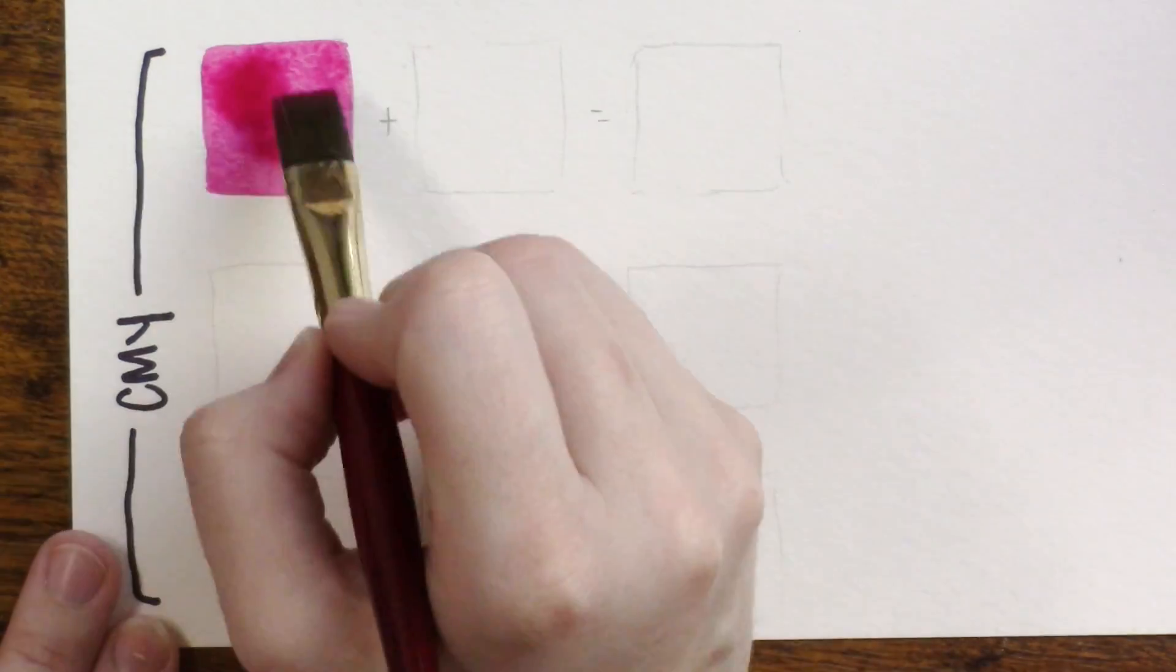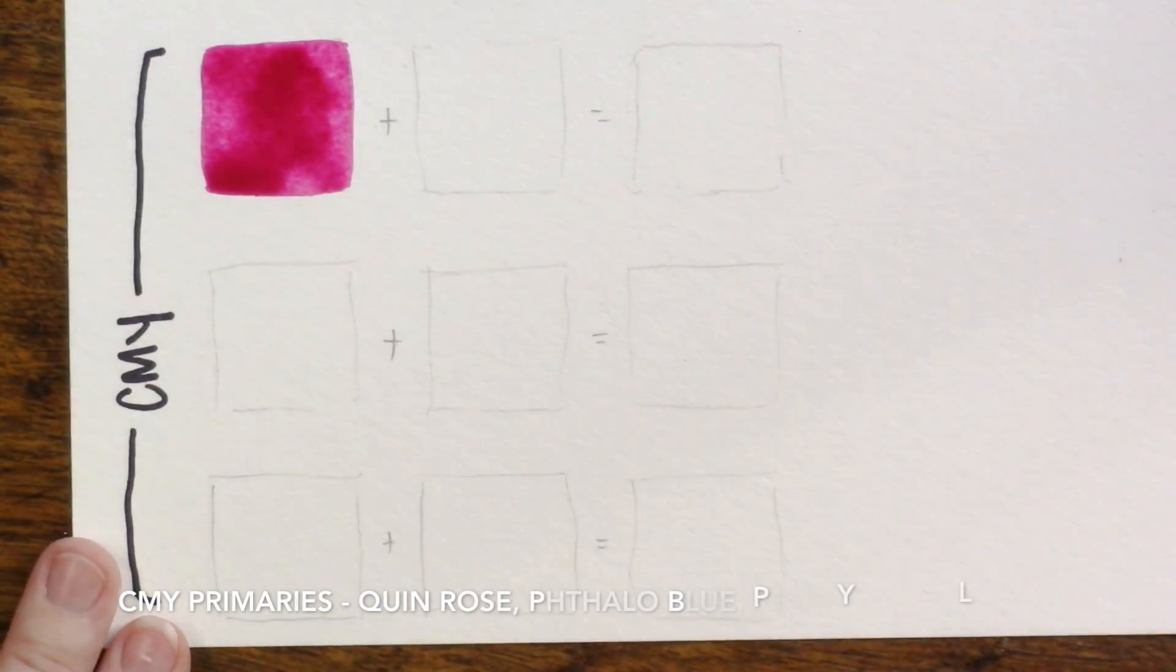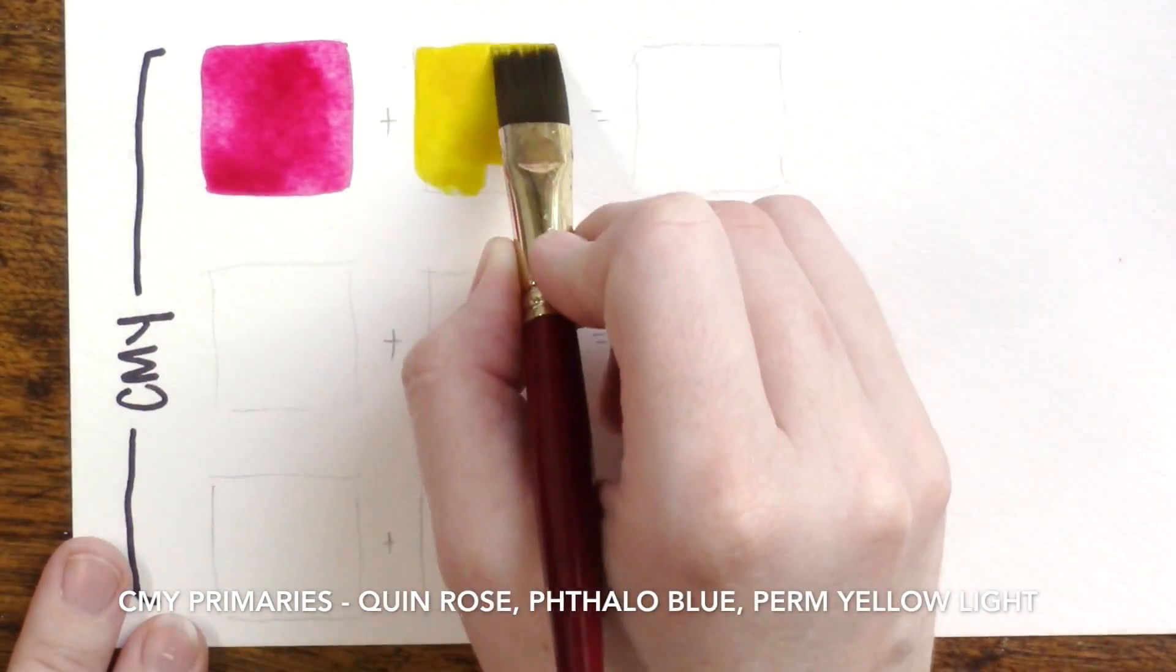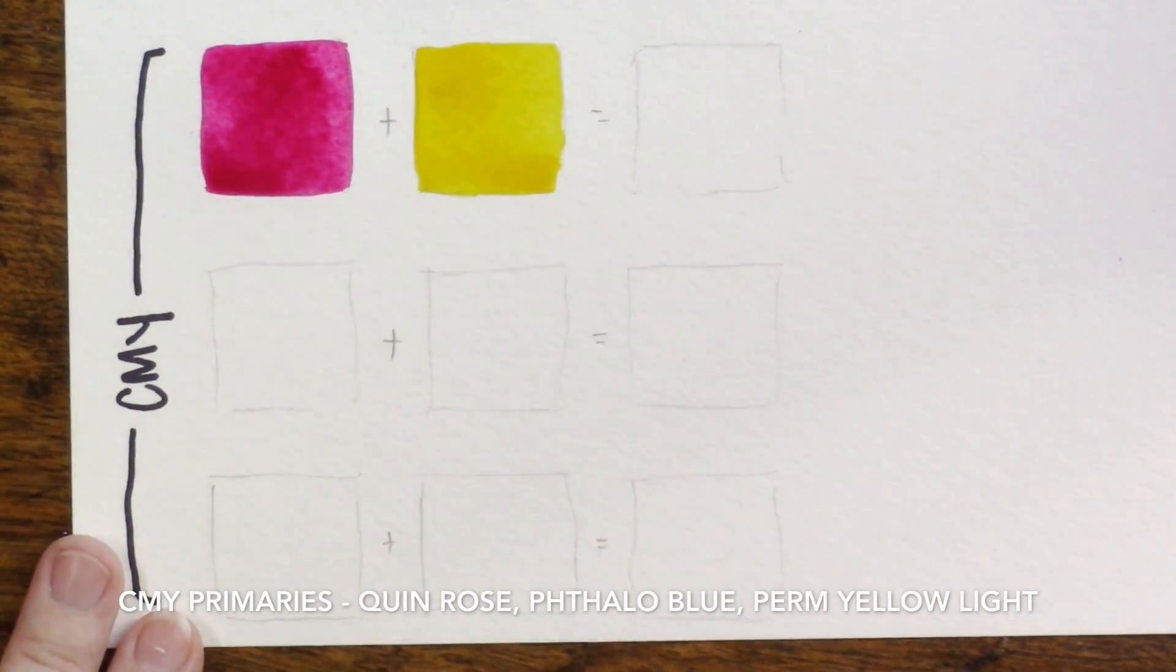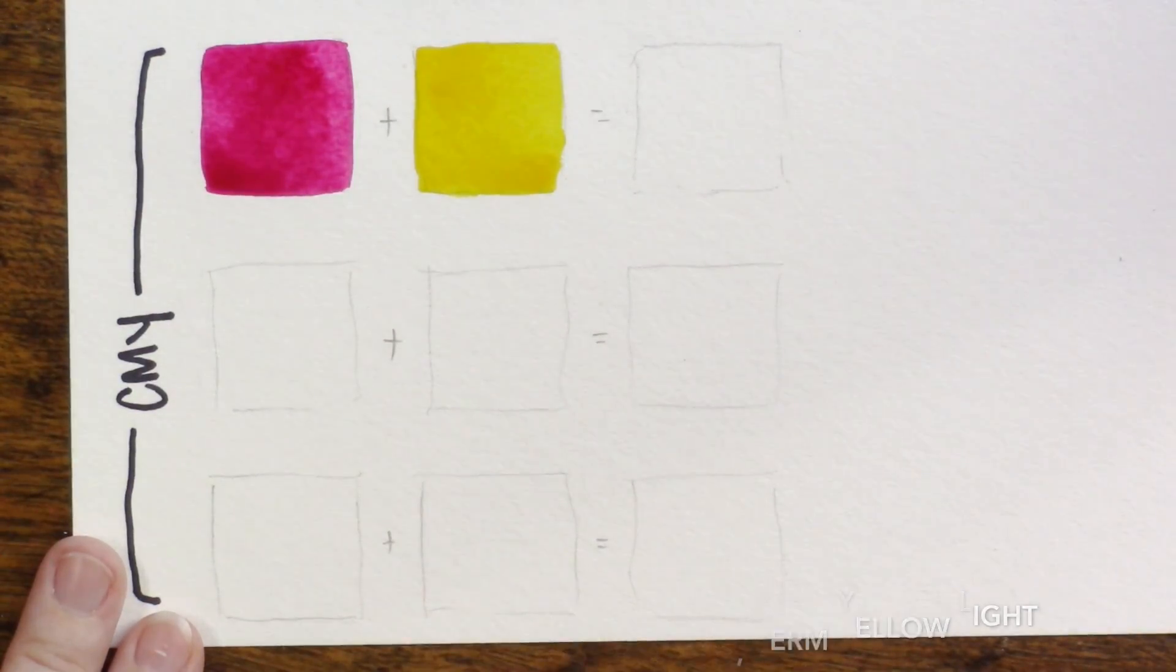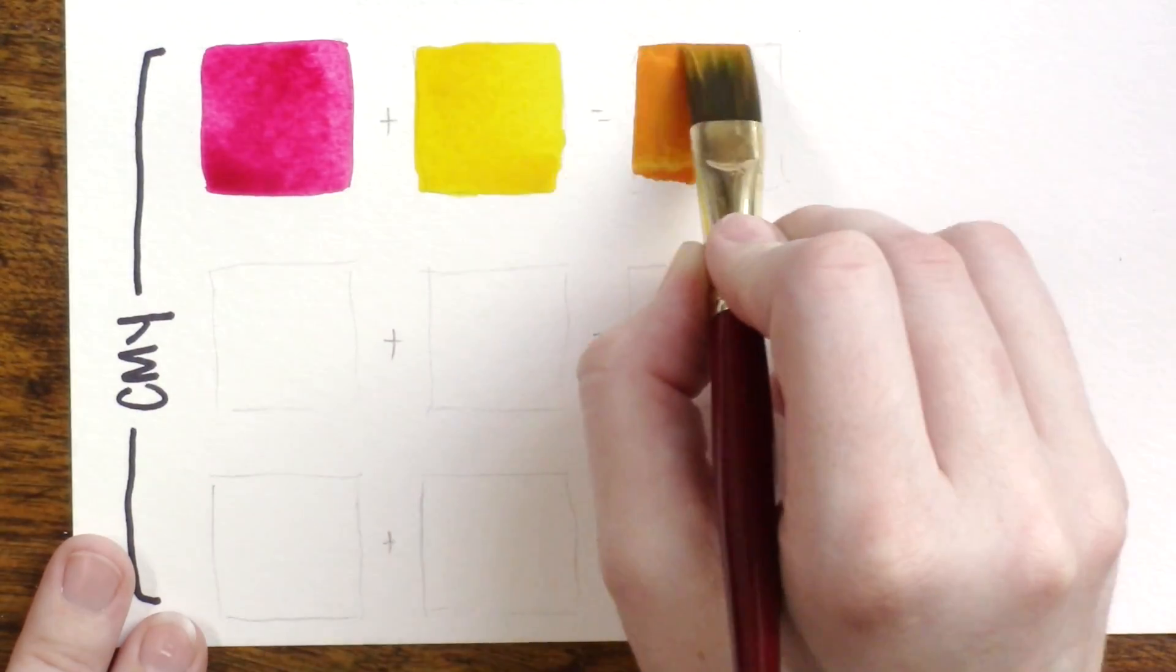Then we're going to take a look at cyan, magenta, and yellow. I'm using a student grade Van Gogh Quinacridone Rose—it's the truest version of magenta that I have in my collection.